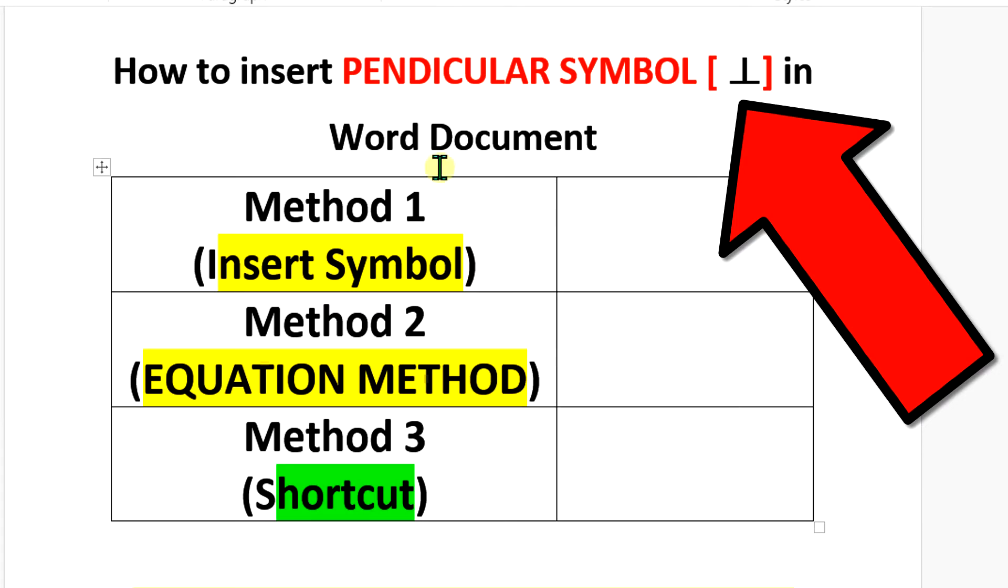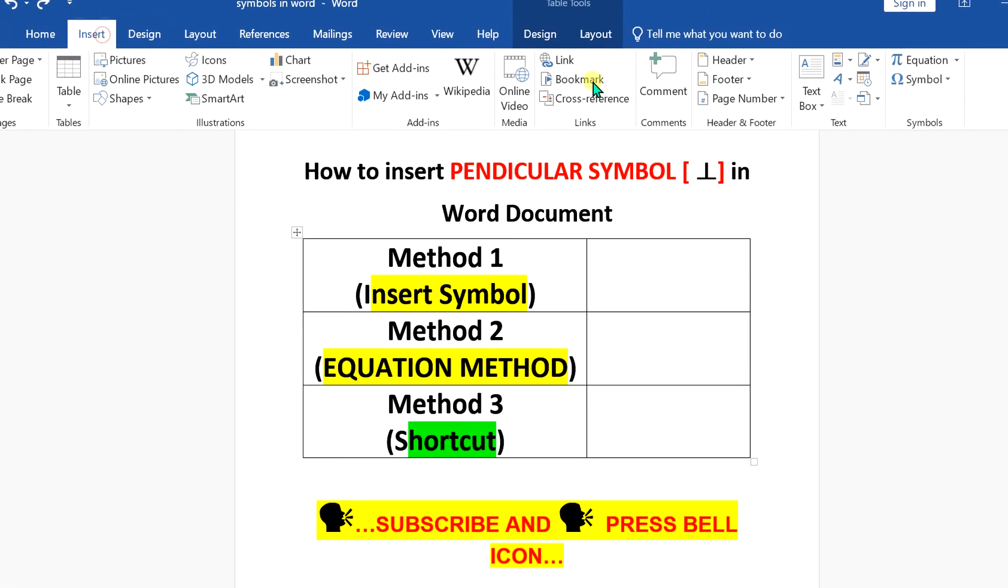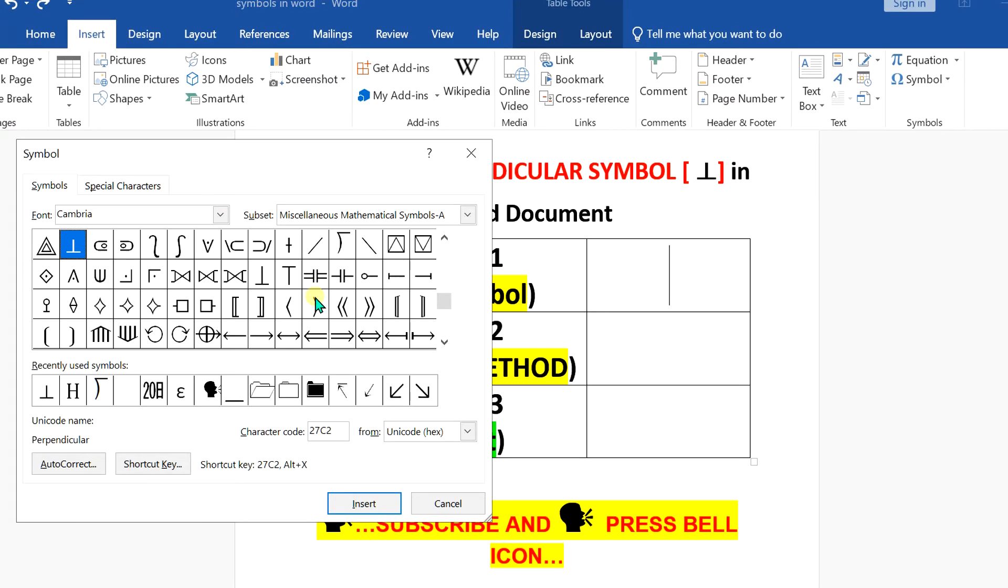Let's see the first method. In the first method, go to the Insert option, click on Symbols, and then More Symbols. Under the font, make sure that you select Cambria.